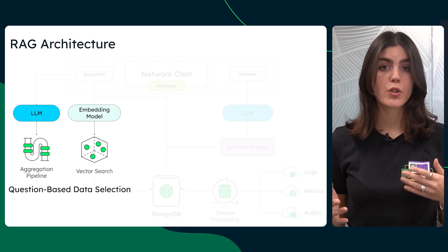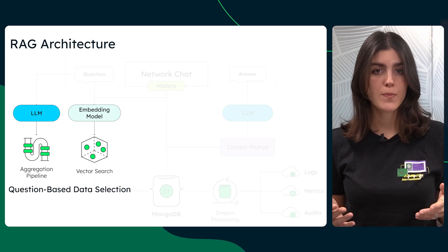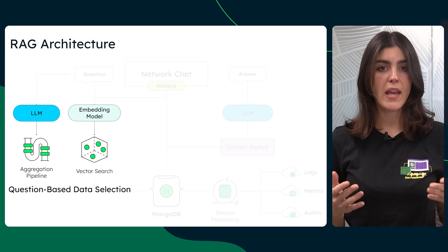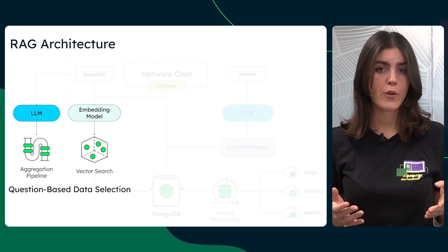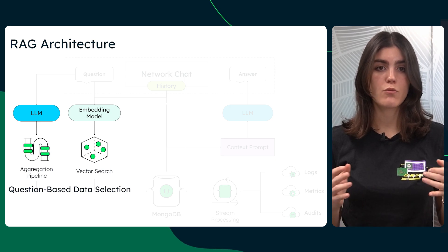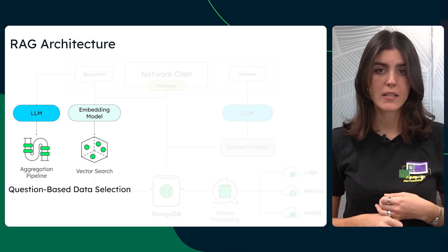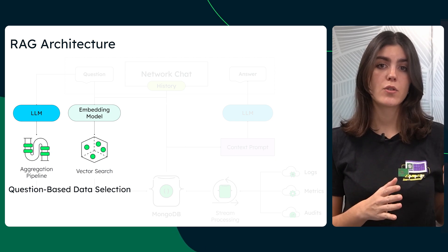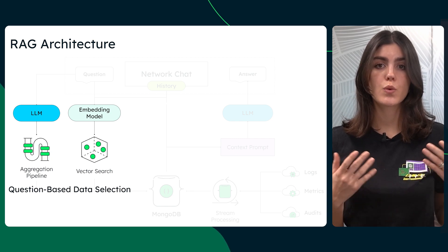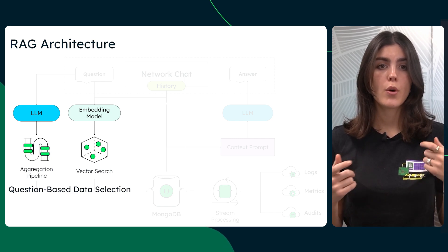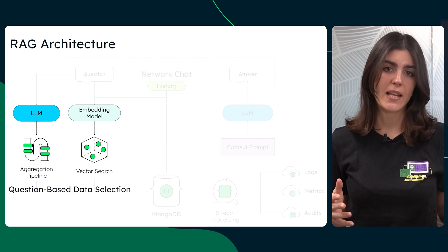Each question goes through an initial processing step. The first pass of the LLM generates a MongoDB aggregation pipeline, selecting the right data items to analyze. In parallel, a vector search could be executed to retrieve relevant information, though this part is beyond the scope of today's demo.